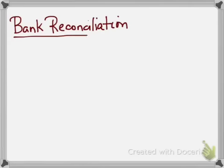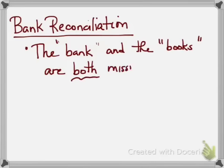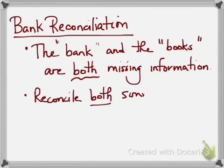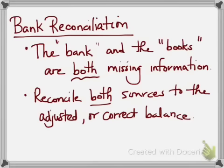Let's look at how to prepare a bank reconciliation. The idea is that you've got two sources of information — the bank and our books — and both tend to be missing information. To reconcile both of them, we're not going to try and adjust one balance to the other. Since both of them are missing information, we're going to adjust or reconcile both of them to the true or corrected balance.